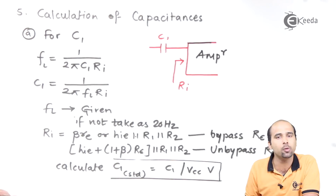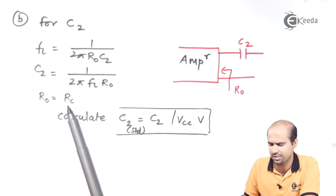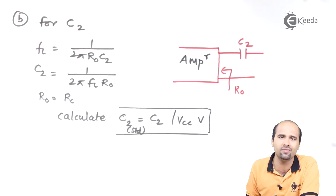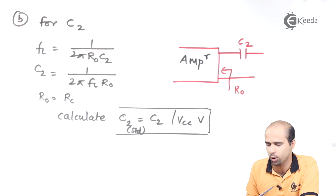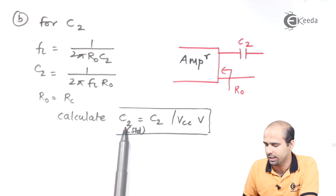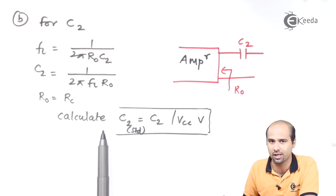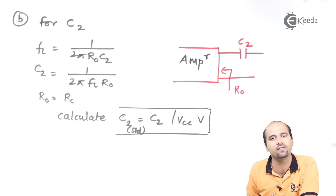For the output coupling capacitor C2, we follow the same procedure but with a different resistance value. That resistance is generally RC only. If load resistance RL is given, take RC parallel RL. If dynamic output resistance is also given, take RC parallel that dynamic output resistance parallel RL. Once we get the value of RO, we calculate C2, standardize it, and rate it as C2 slash VCC volts.